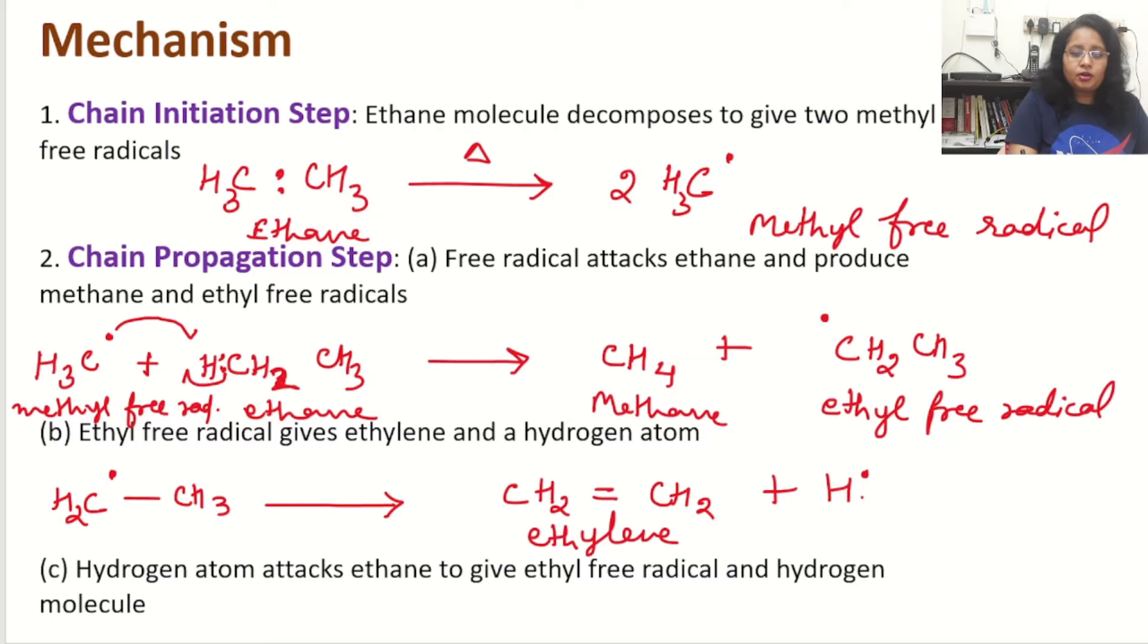Now what is going on here? One hydrogen from CH3 in the ethyl free radical moves outside and the one electron which is present does the bonding. This electron and this free radical is making a bond.